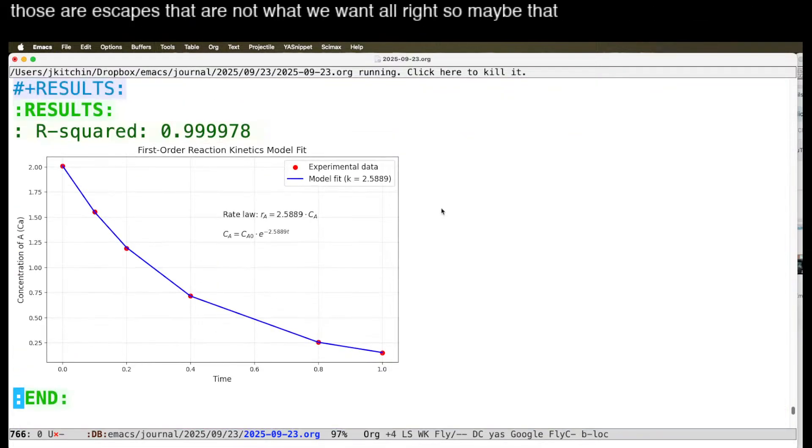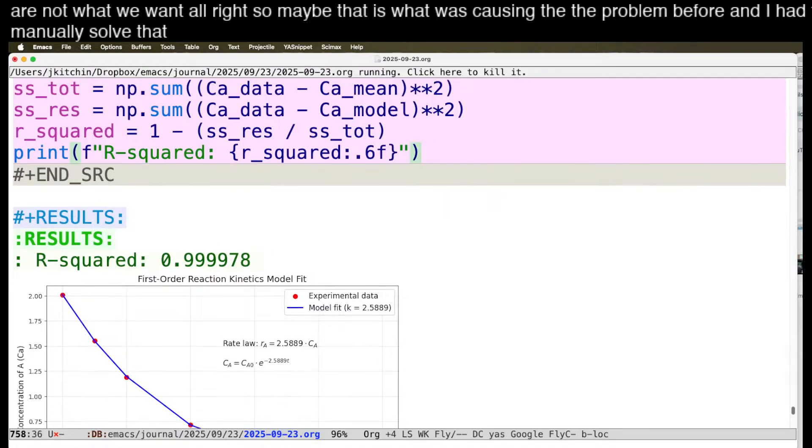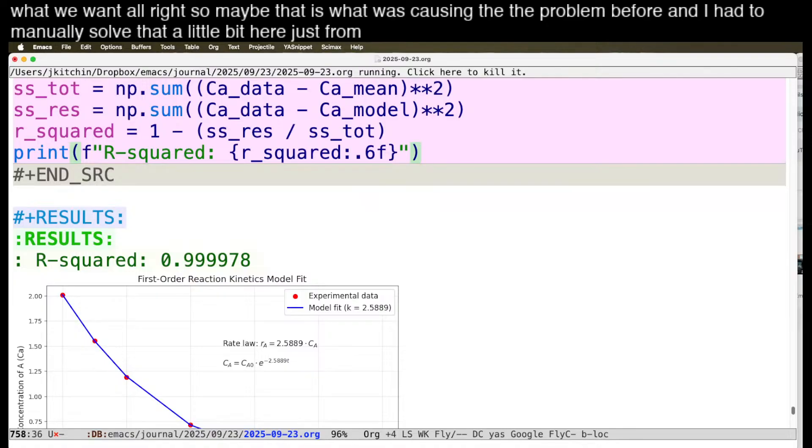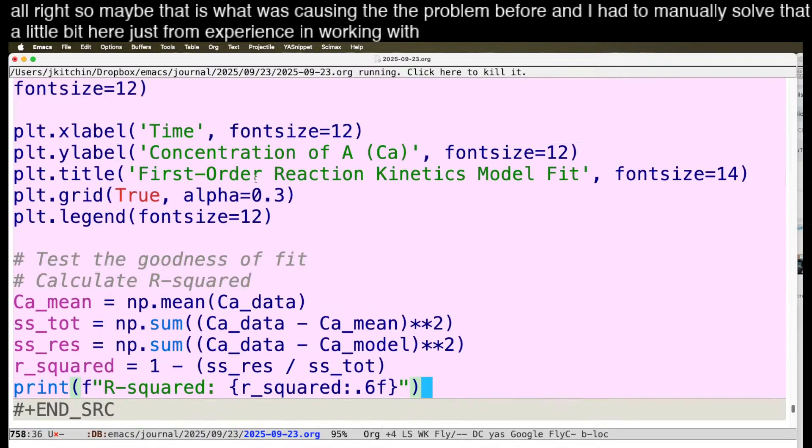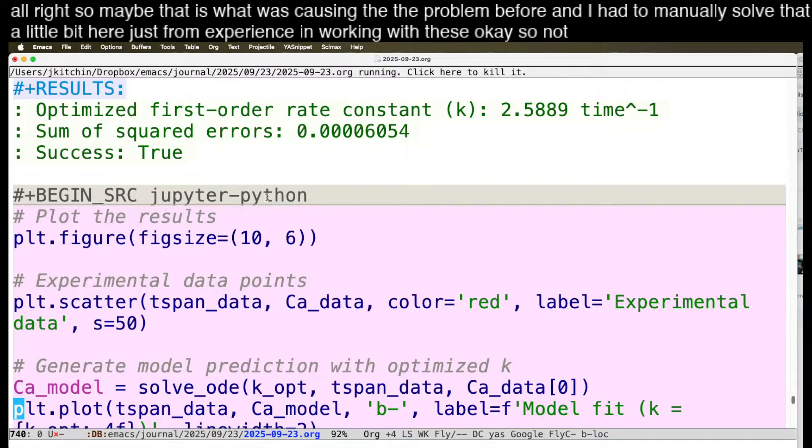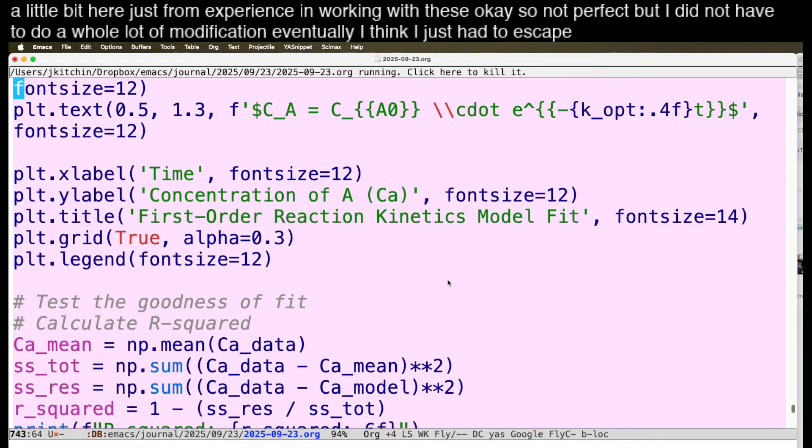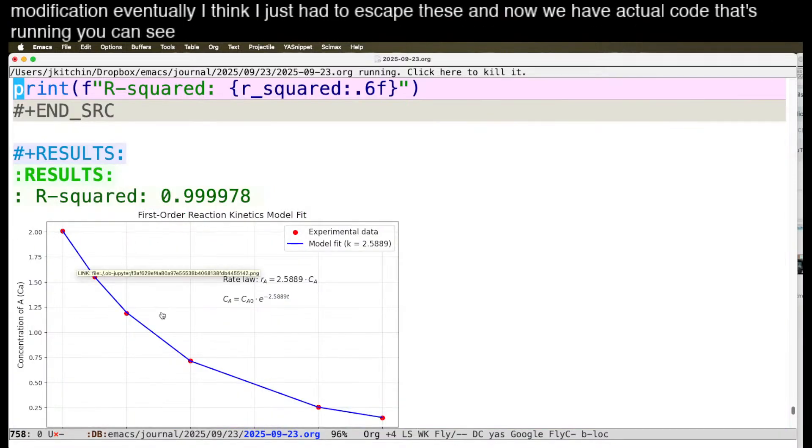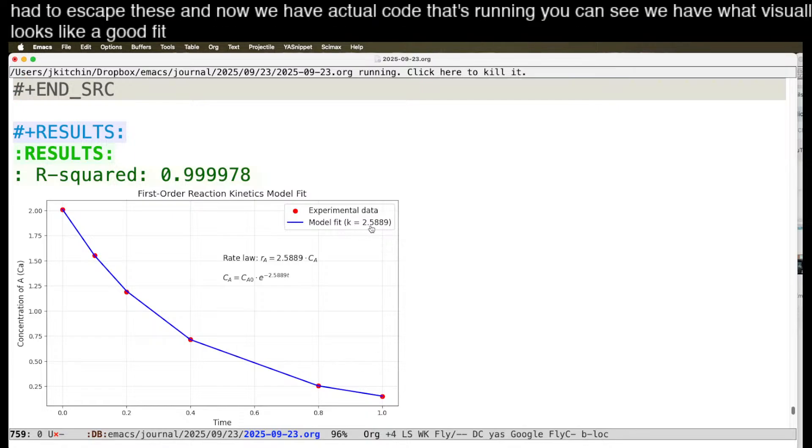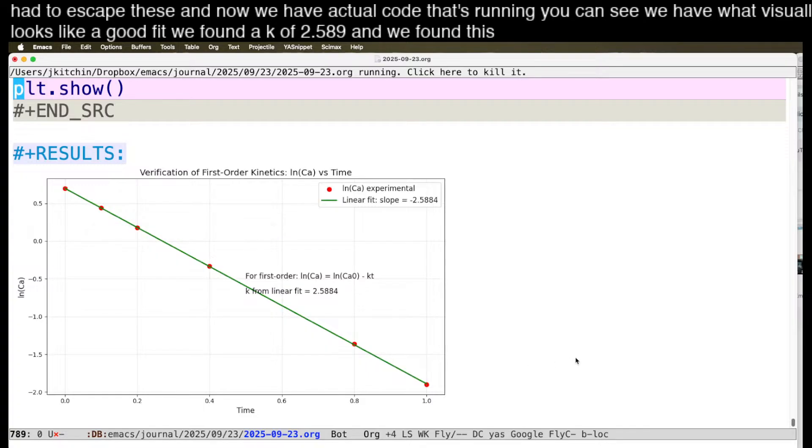Alright. So maybe that is what was causing the problem before. And I had to manually solve that a little bit here just from experience in working with these. Okay. So not perfect. But I did not have to do a whole lot of modification. Eventually, I think I just had to escape these. And now we have actual code that's running. You can see we have what visually looks like a good fit. We found a k of 2.5889. And we found this linear behavior here, which kind of is everything that we were looking for.